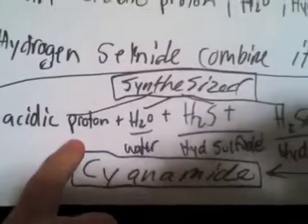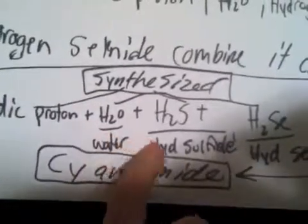The second main component is cyanamide, CH2N2. It is an organic compound. And when an acidic proton and water H2O and hydrogen sulfide H2S and hydrogen selenide H2SE all synthesize, it creates cyanamide.